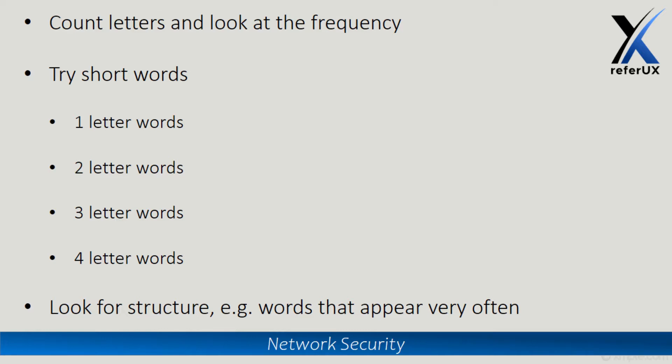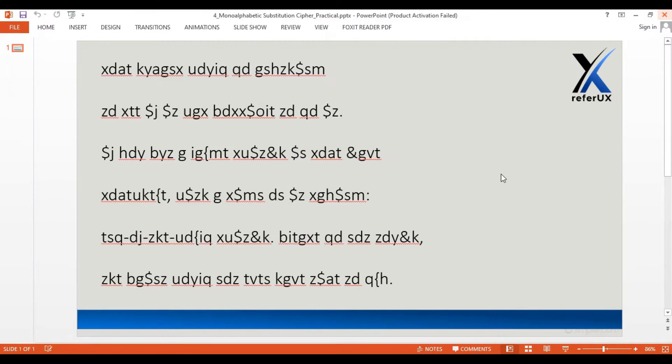We can try for short words like one-letter words, two-letter words, three-letter words, and four-letter words, which are very common in the English language. We can also look for structures — for example, words that appear very often — to get some idea of what could possibly be the decryption. So let's begin by using this online frequency analyzer to get the letter frequency distribution of this cipher text.